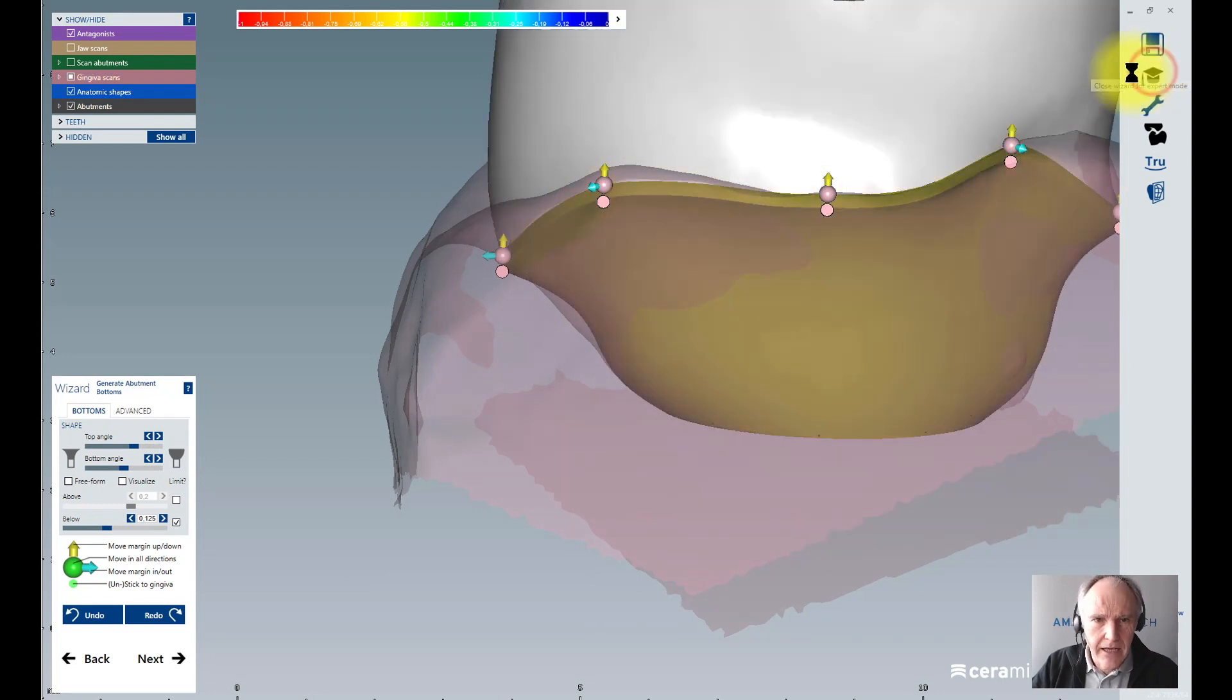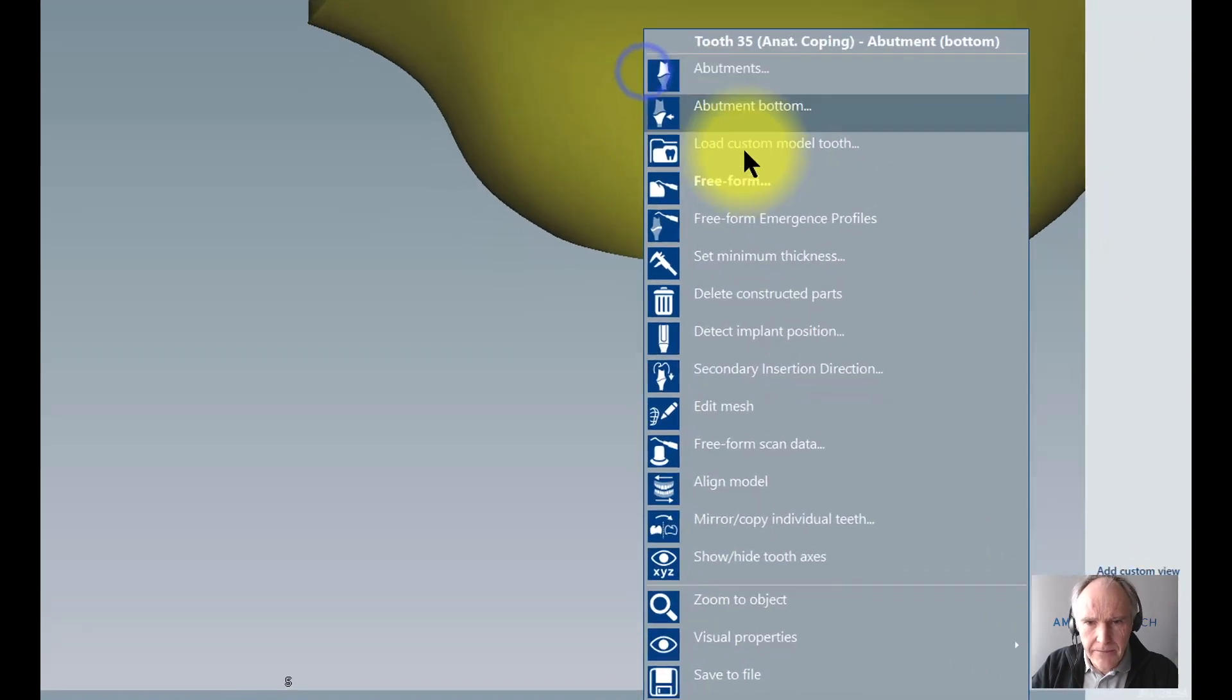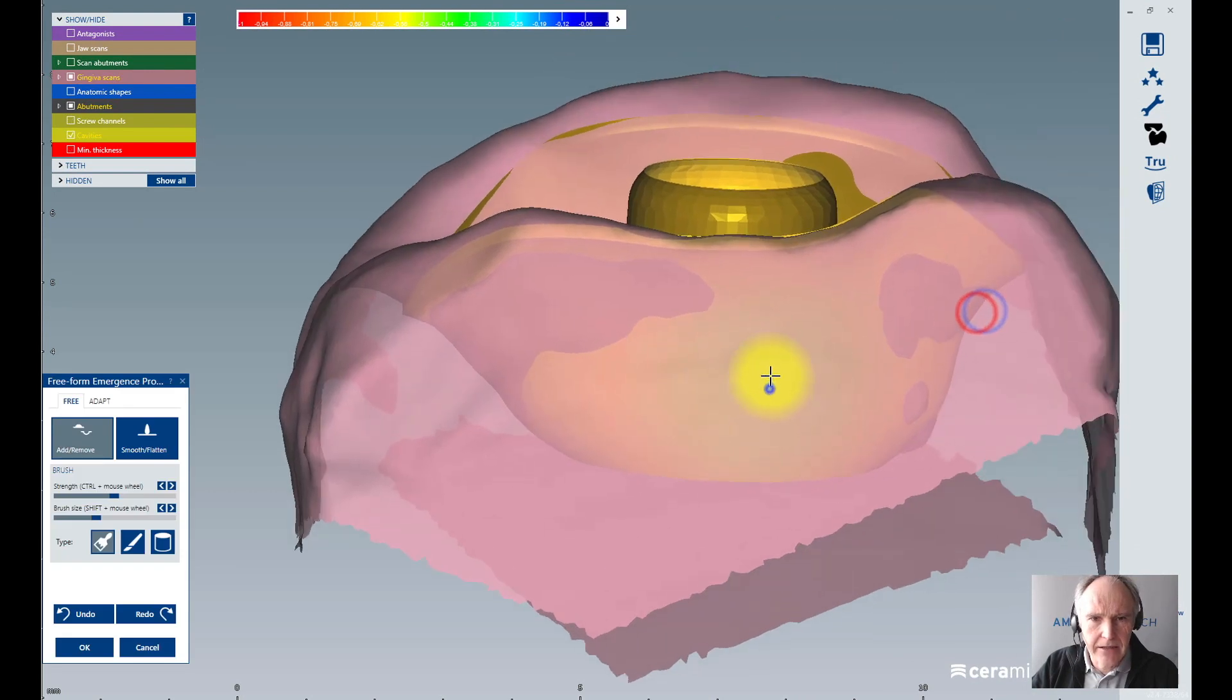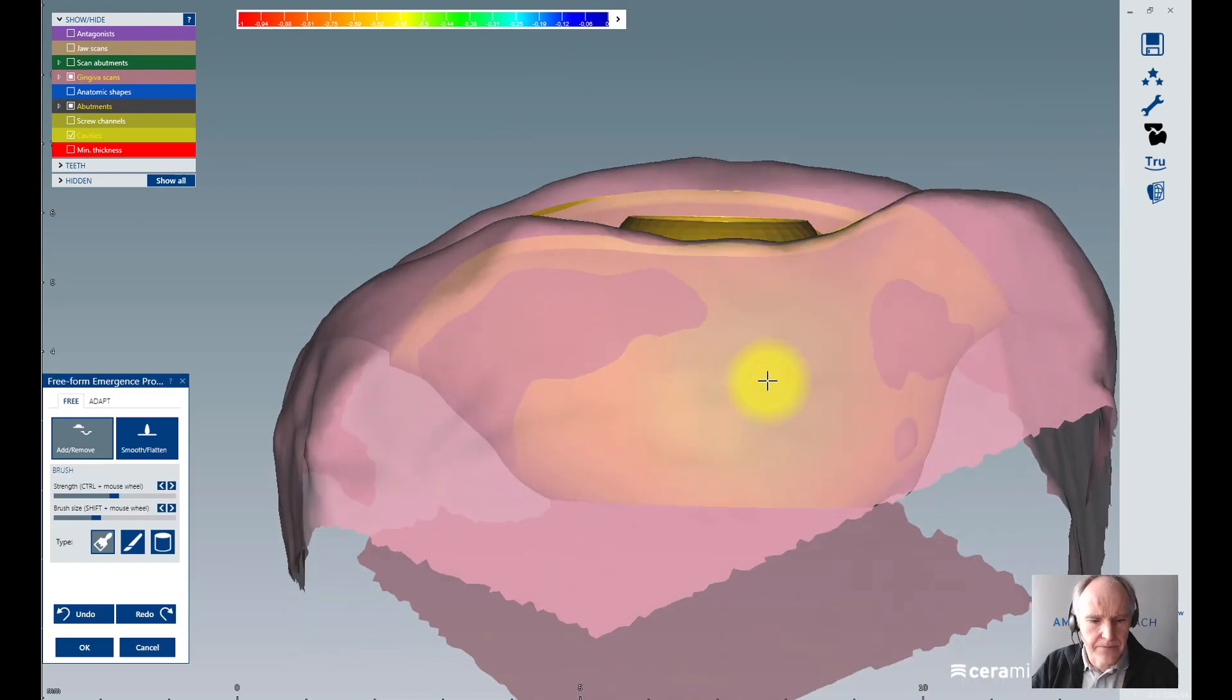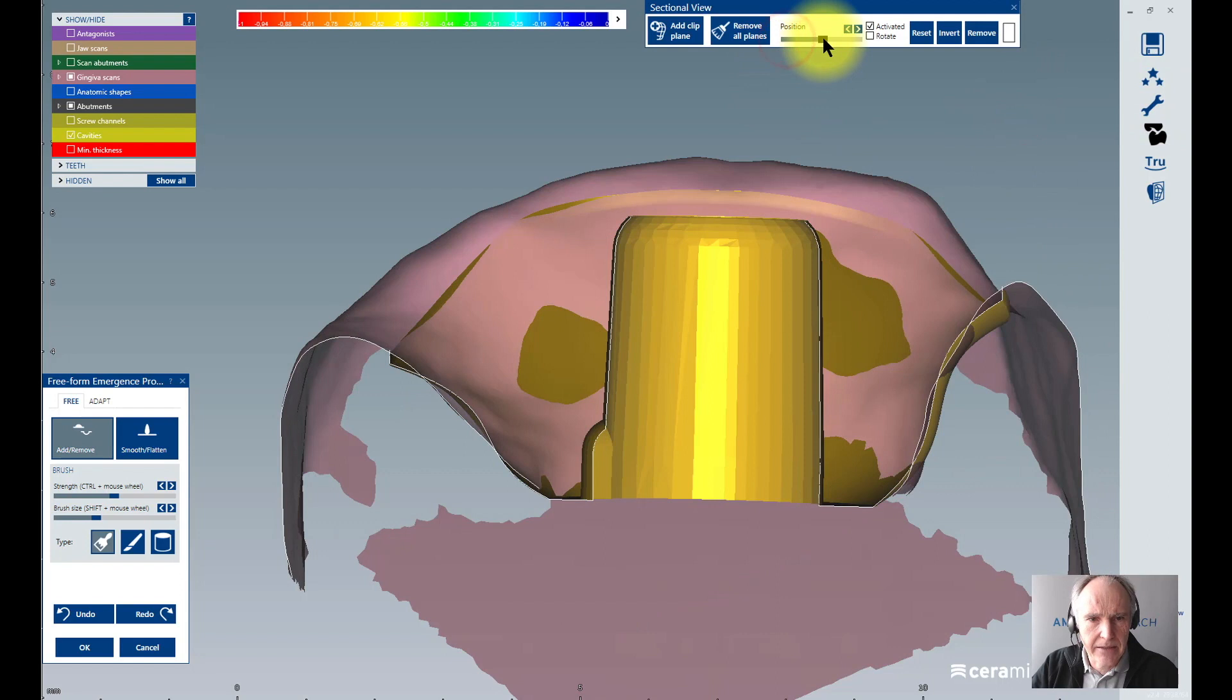You go to the export mode, and here in export mode you find a command called freeform emergence profiles. With that profile editing I can make a special cut. To show that a little closer, I go to the export tool here to the sectional view and I cut my abutment in the middle to show you closer what to do here.